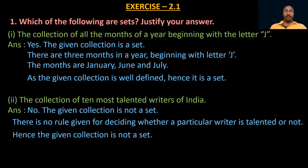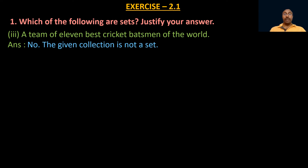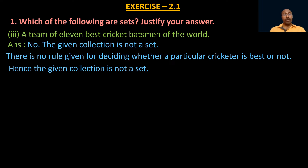Third one: a team of 11 best cricket batsmen of the world. As we saw in the earlier problem, there is no rule given to decide whether a given cricketer is the best or not. Therefore, the given collection is not a set, because there is no rule given for deciding whether a particular cricketer satisfies the criterion of being the best.